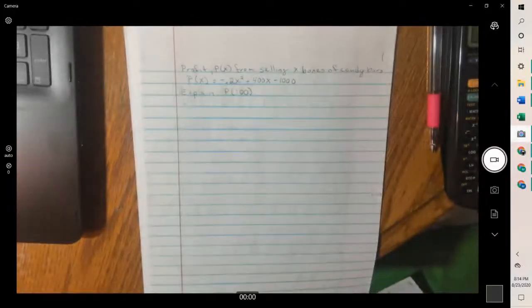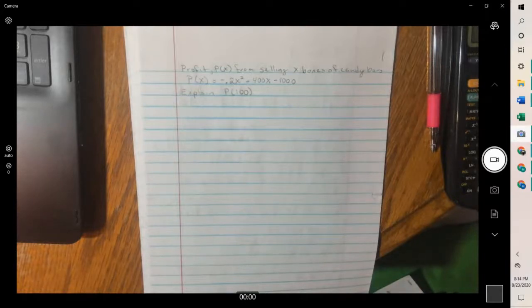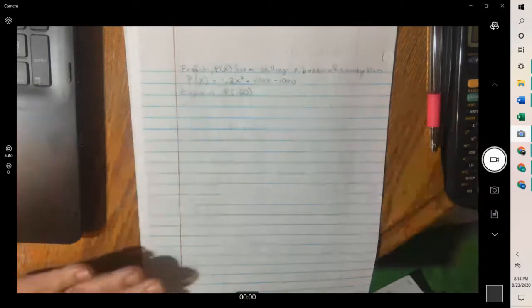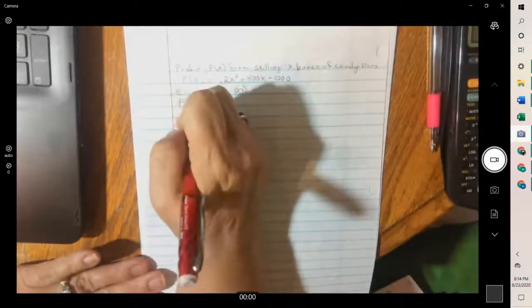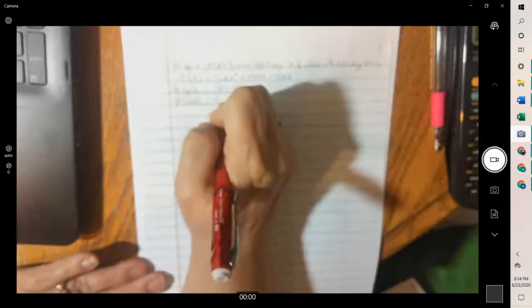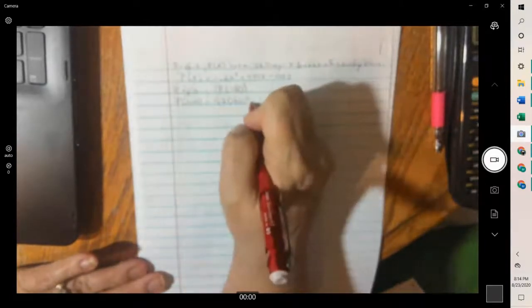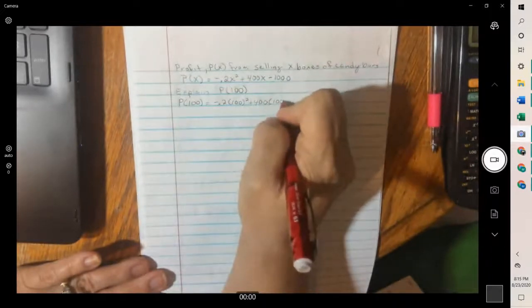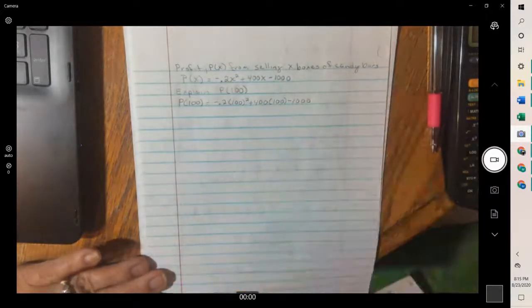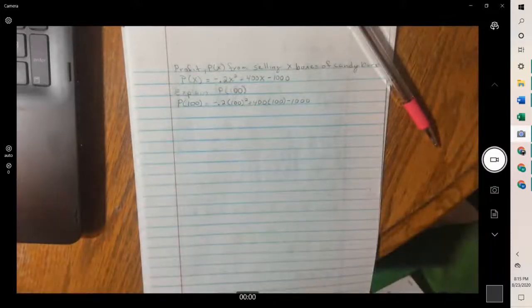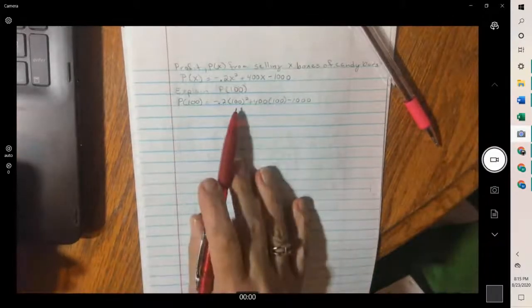Another one. Profit. P of x, which is the profit from selling x boxes of candy bars. P of x equals negative 0.2x squared plus 400x minus 1. Find and explain P of 100. So we plug in the hundreds. I think I would calculate that. I just want to be at x where it.